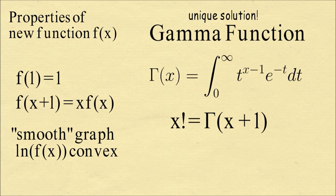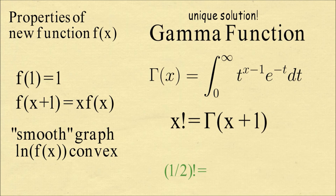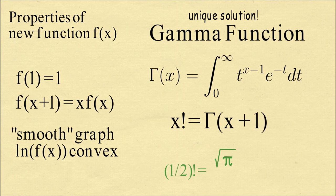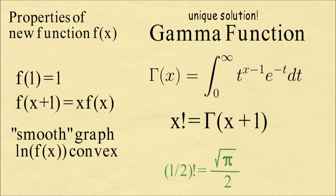So since x factorial is defined this way, we can then evaluate the gamma function to find out that one-half factorial is equal to square root of pi over two.